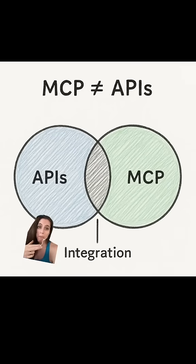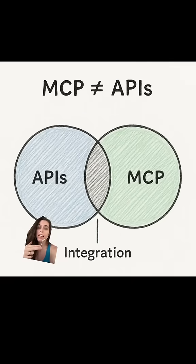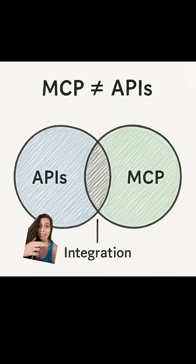Unlike APIs, you cannot review and pin trusted versions within an MCP environment. MCP involves runtime-provided text, so if multiple servers are connected, one malicious server can trick the LLM into misusing the others. That's called data exfiltration, and these risks are unique to MCP.